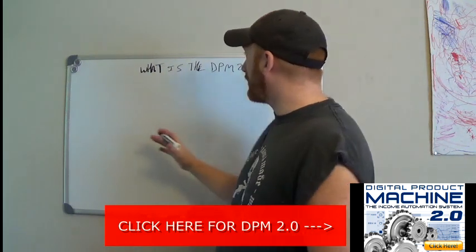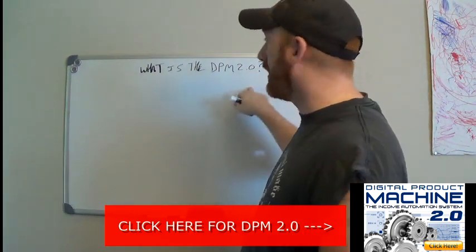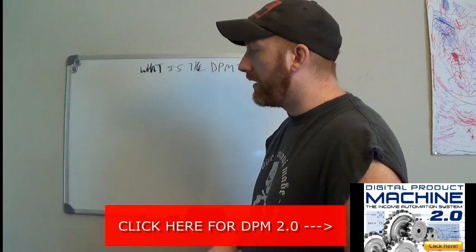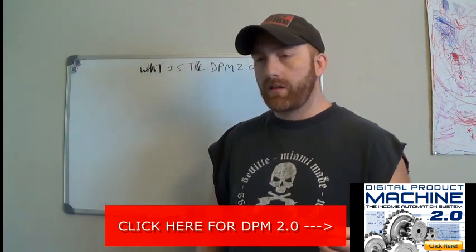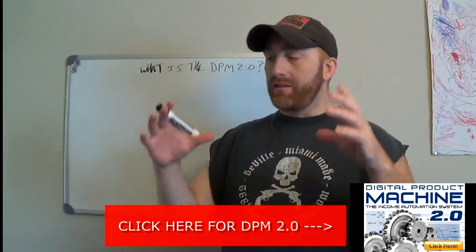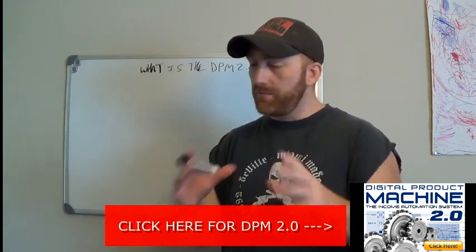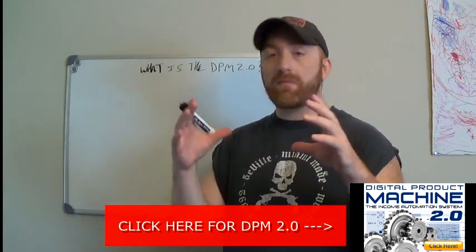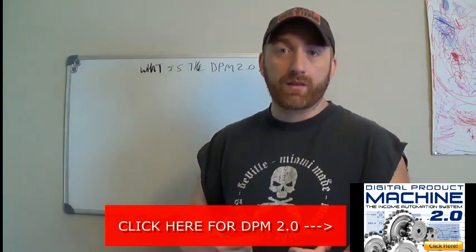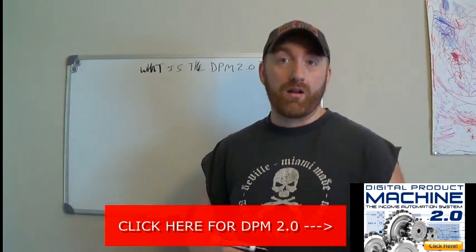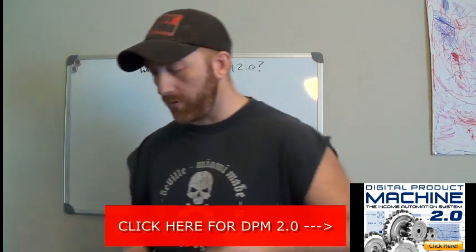The Digital Product Machine is an idea — the idea that you can create a simple automated system that kind of makes you money on autopilot. Now that's more than just creating a product, but let's start with a product.